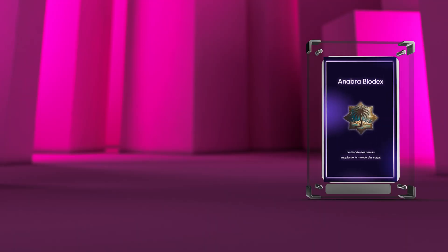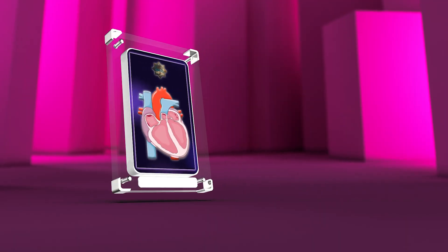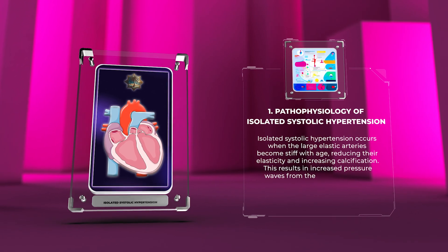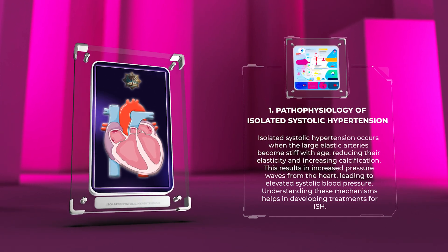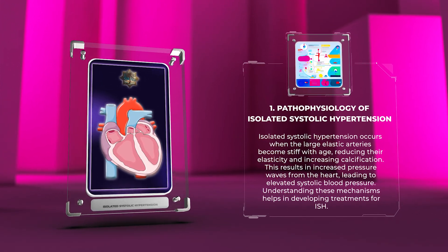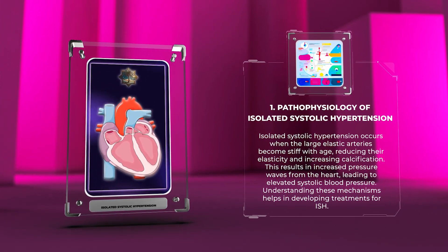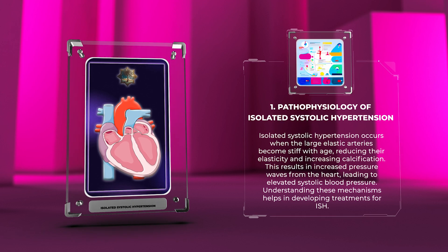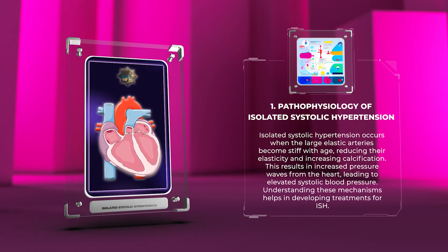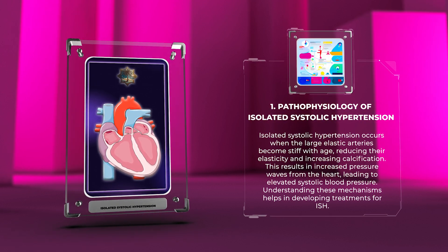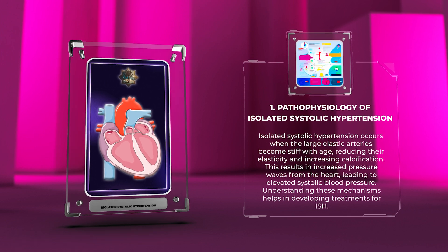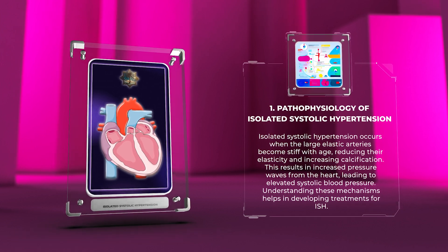Isolated systolic hypertension occurs when the large elastic arteries become stiff with age, reducing their elasticity and increasing calcification. This results in increased pressure waves from the heart, leading to elevated systolic blood pressure. Understanding these mechanisms helps in developing treatments for ISH.